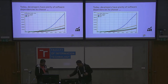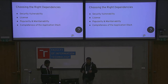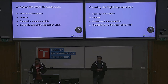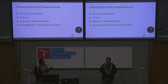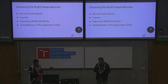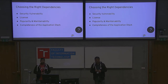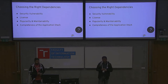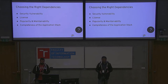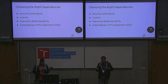When we started with this problem we figured out three basic parameters based on which we can decide whether or not to include a dependency. The first one is security vulnerability — checking whether a dependency is vulnerable can be a very good criteria to choose or not choose a dependency.